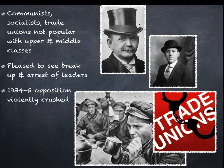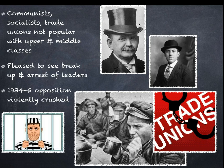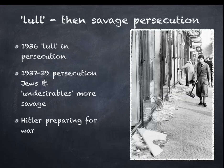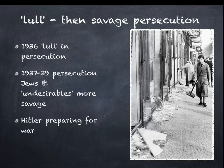After Hitler becomes chancellor, he consolidates his power by 1934 with the Enabling Act, and opposition is violently crushed. Many communists and trade unionists are imprisoned, and concentration camps such as Dachau are opened. There is something of a lull — a pause in persecution in 1936 — because the Berlin Olympics were being staged and the Nazis wanted to present an acceptable face to the outside world. Between 1937 and 1939, though, persecution of Jews and other groups designated as undesirables was much more savage.